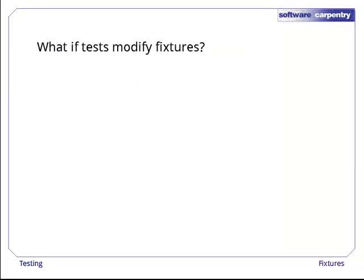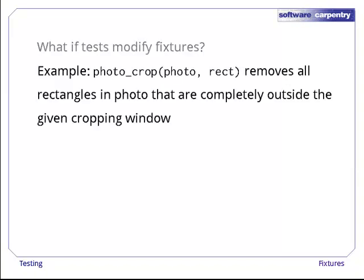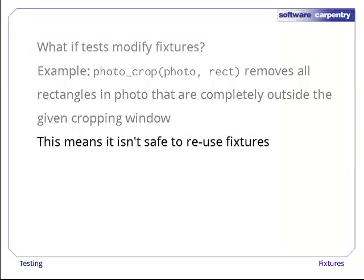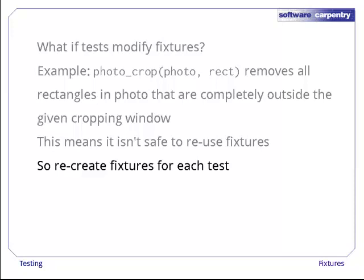And even when you can do everything in one go, there's still another good reason to use a setup function. What happens if some or all of your tests modify the fixtures they run on? For example, suppose we're testing a function called photo_crop that removes rectangles lying completely outside some cropping window. Since our tests modify our fixtures, we can't use the same fixtures over and over in separate tests. If we did, a bug in one place would contaminate the results of tests that were run later. The solution is to recreate the fixtures for each test, i.e., to run setup over again just before each test function.